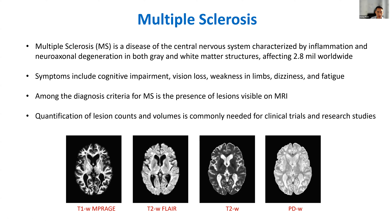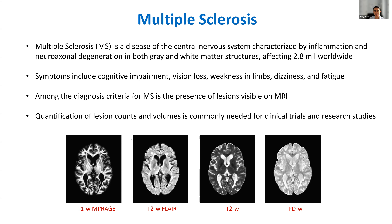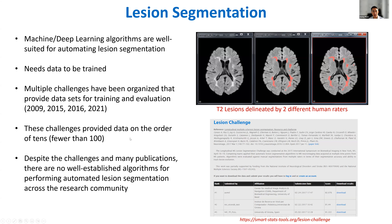This ability to visualize these pathological processes in the brain has pointed to the use of quantification of either lesion counts or lesion volume for clinical trials and many research studies. There's a lot of interest in trying to automate the process of quantifying the lesions.